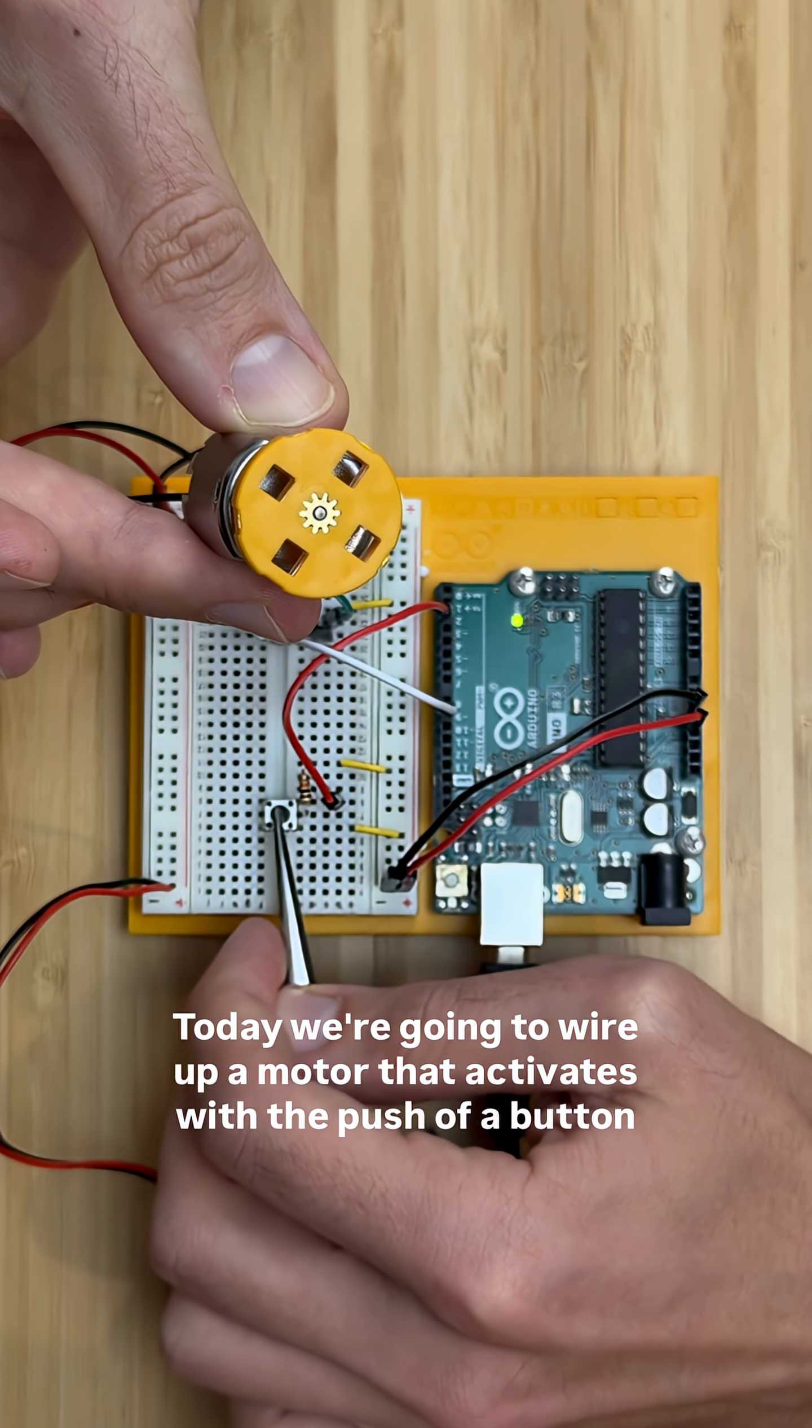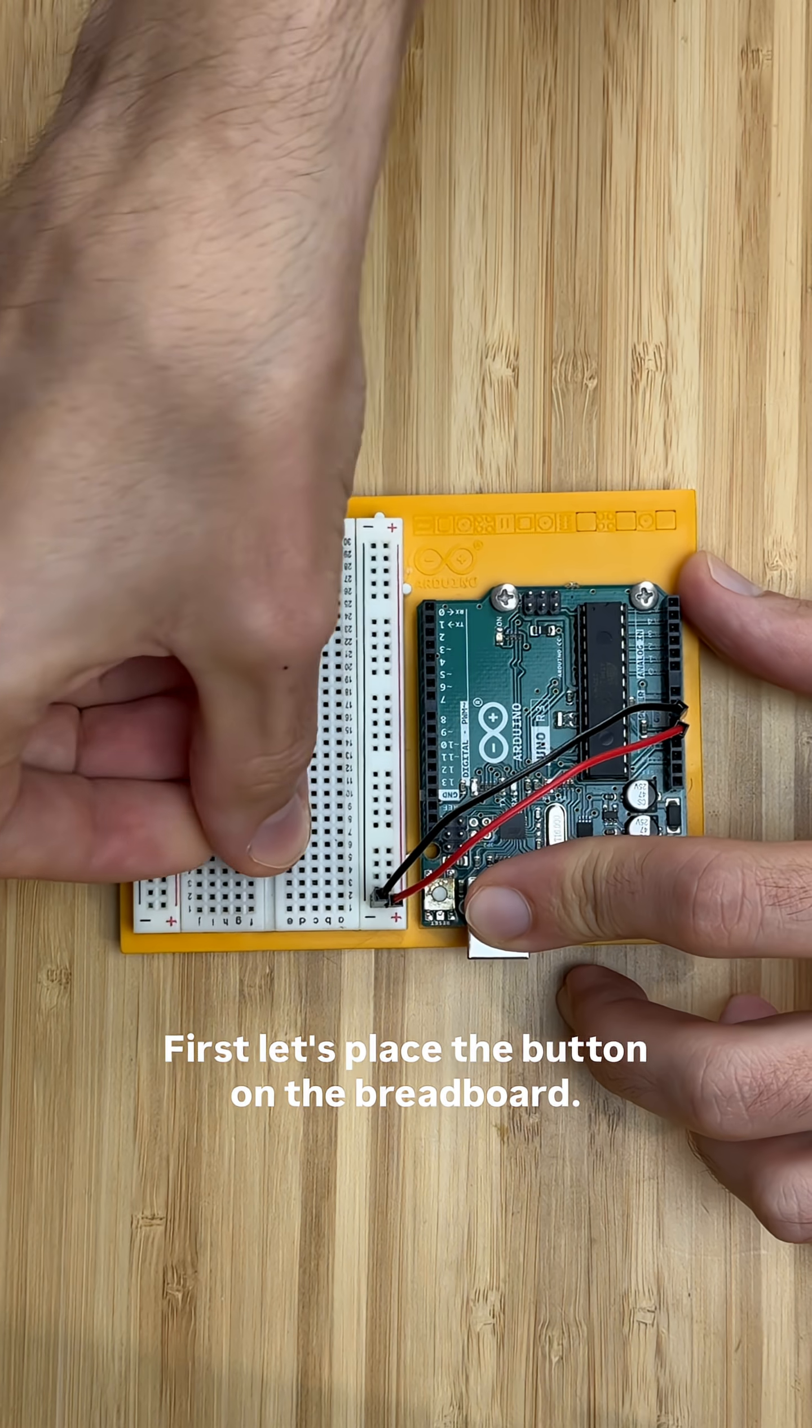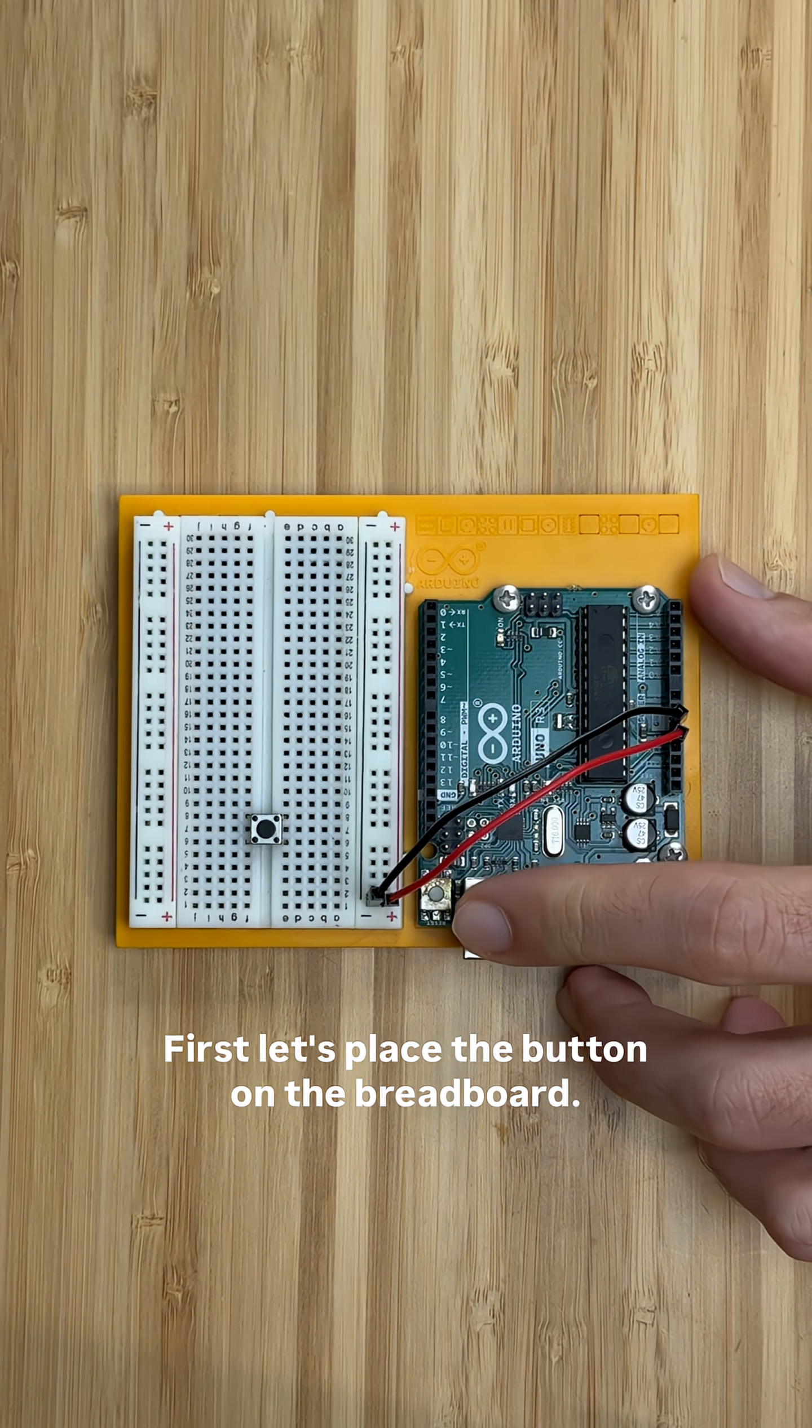Today we're going to wire up a motor that activates with the push of a button. First, let's place the button on the breadboard.